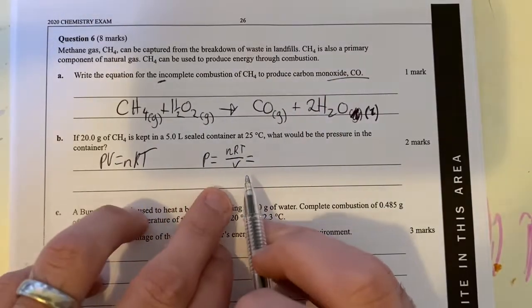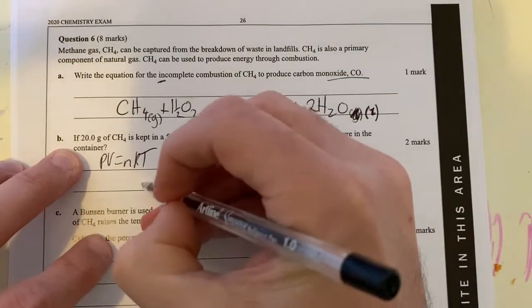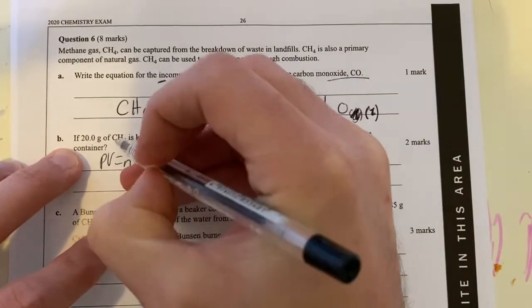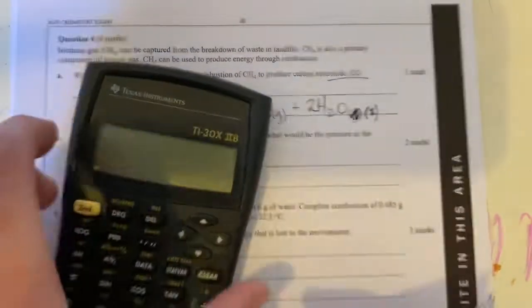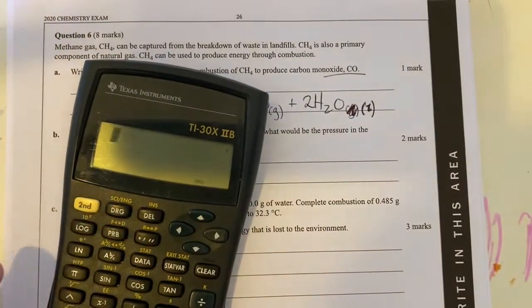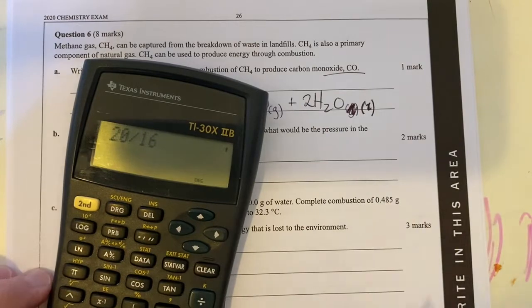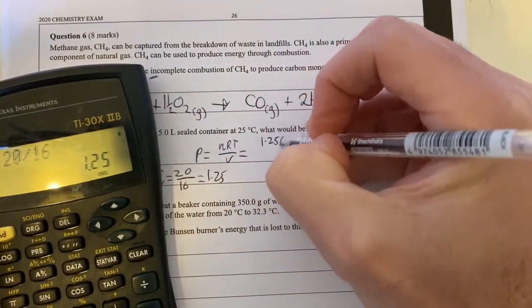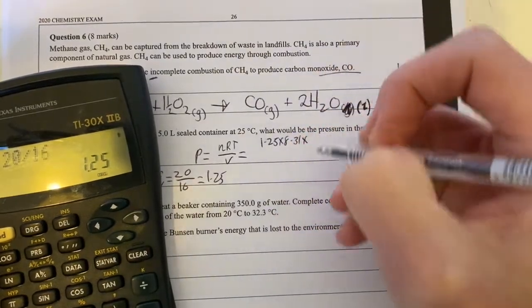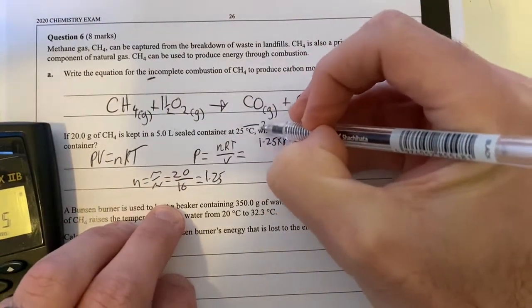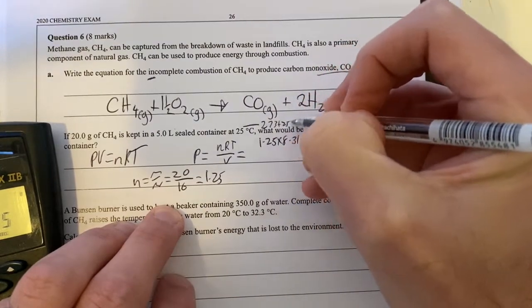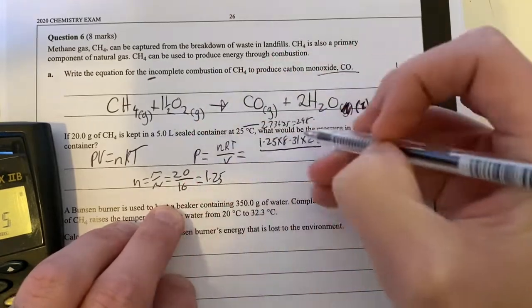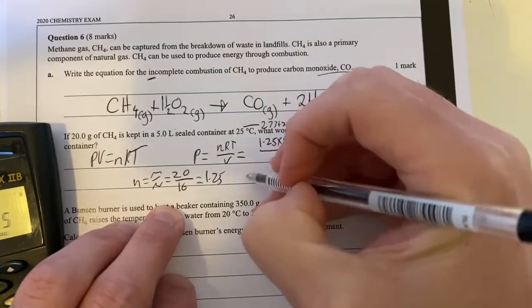I can just plug in my numbers here. My number of moles, I'll get from M over MR. So let's take 20 divided by 16. That gives me 1.25. So it's 1.25 times 8.31 times my temperature, which will be in Kelvin. That's going to be 273 plus 25 is 298 times 298, all divided by my volume, which is 5 liters.